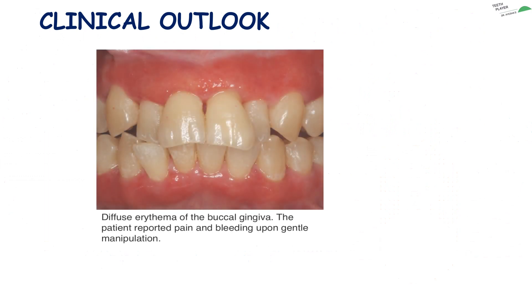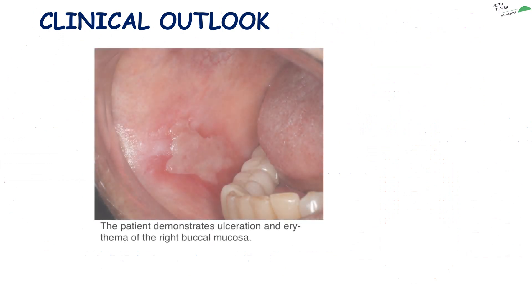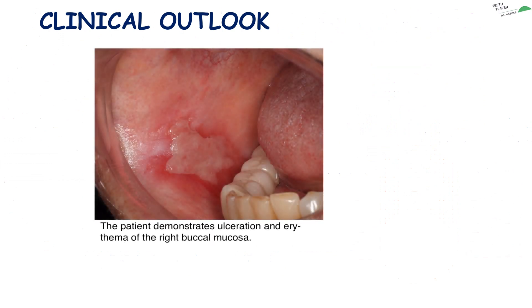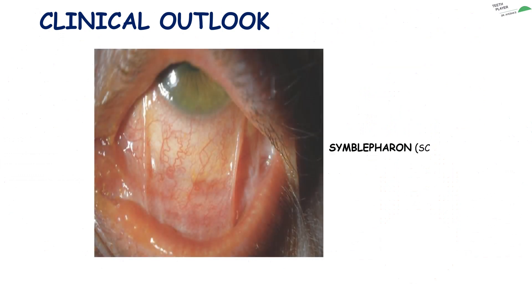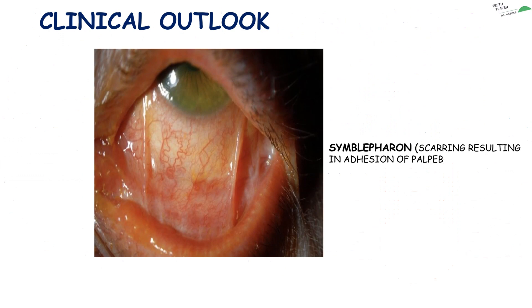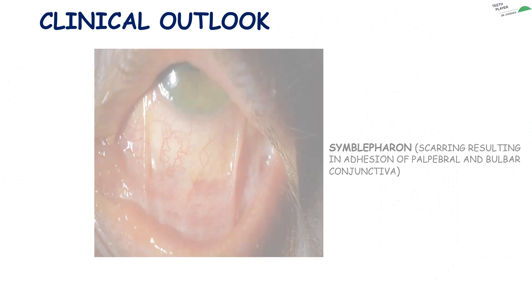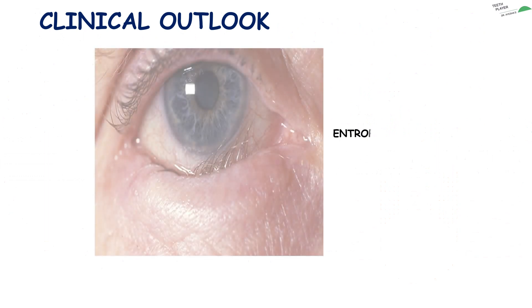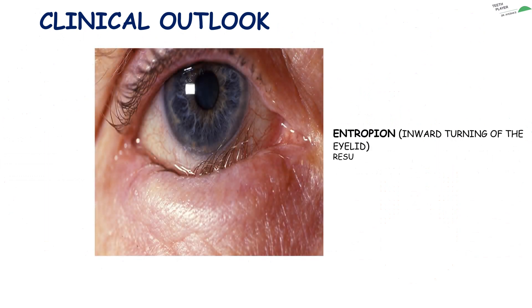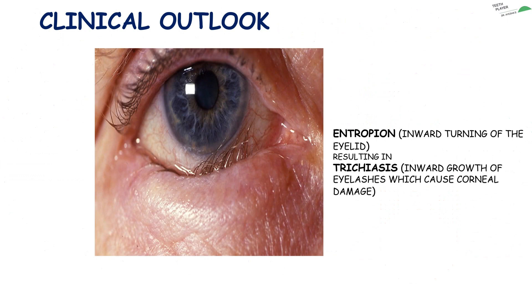The diffuse erythema of buccal gingiva can be seen, along with ulcerations and erythema of the right buccal mucosa. Symblepharon is scarring resulting in adhesion of palpebral and bulbar conjunctiva. Entropion is the inward turning of the eyelid resulting in trichiasis, which is inward growth of eyelashes, causing corneal damage.